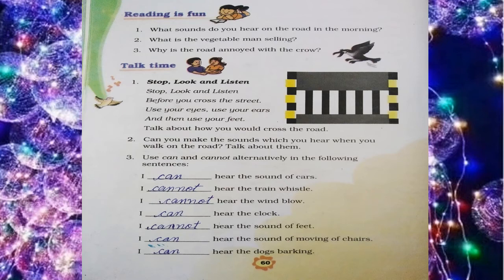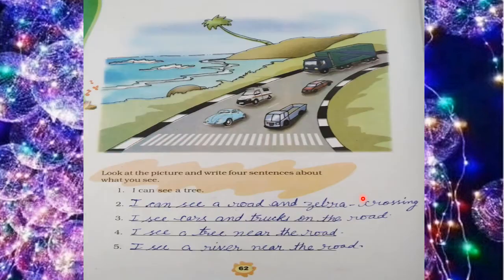Now come to the next question. Here you can see there is a picture — there is a road, and on this road there are many different types of vehicles, heavy vehicles going on this road. In this question, look at the picture and write four sentences about what you see.